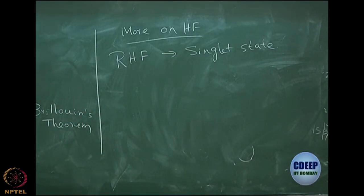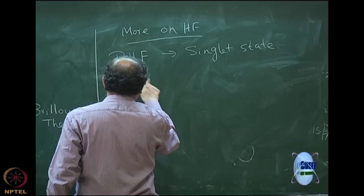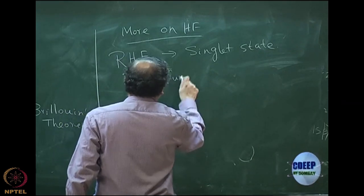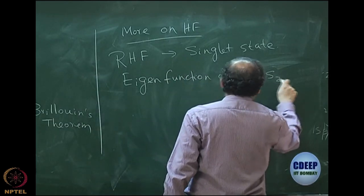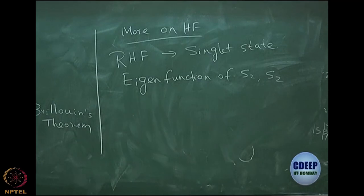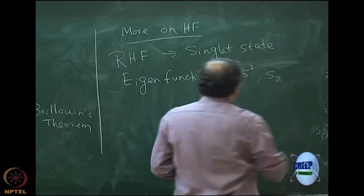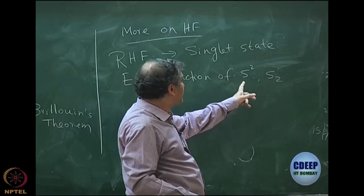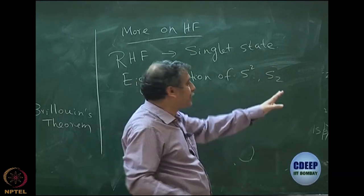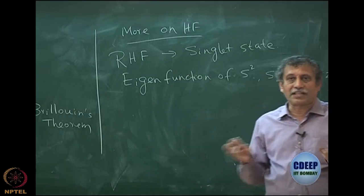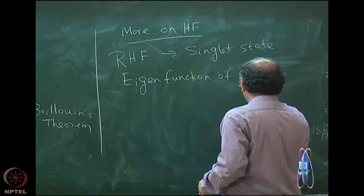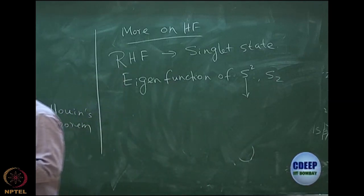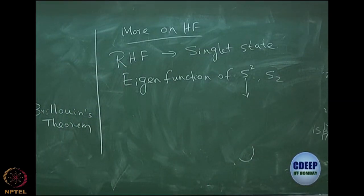What is a singlet state or a triplet state? It is an eigenfunction of S-squared and one of the S operators, conveniently taken as Sz, just like angular momentum. For eigenfunction of S-squared, you have square root of S(S+1) over h-bar, and for Sz you have just Ms times h-bar. When S(S+1) equals 0, that is why it is called singlet.